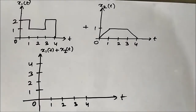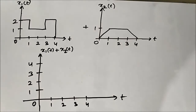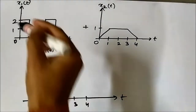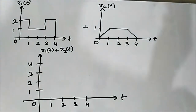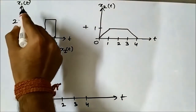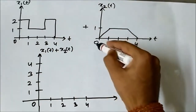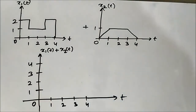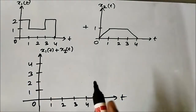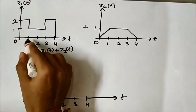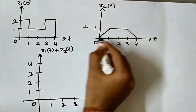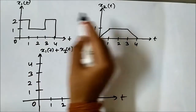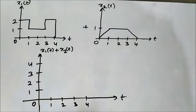Previously we performed signal addition on basic test signals such as step and ramp signals. Here we will perform signal addition on some random signals of various shapes. We have two signals x1(t) and x2(t), and we need to perform x1(t) plus x2(t). The principle of signal addition states that at each time instance we have to add the respective signal amplitudes.